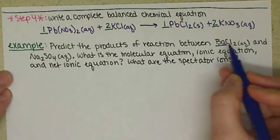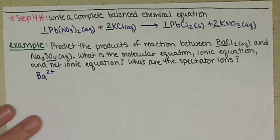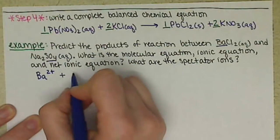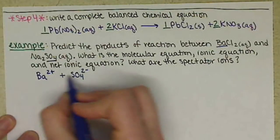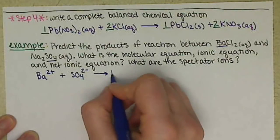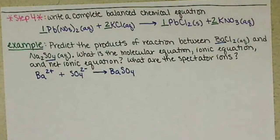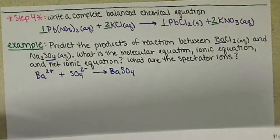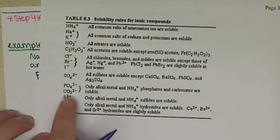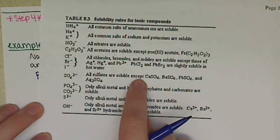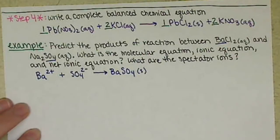So we have the barium ion combining with sulfate. Barium is in group 2A of the periodic table. Sulfate has a 2-negative charge, and barium has a plus-2 charge, so we need a 1-to-1 ratio, giving us BaSO₄. To determine the phase, we consult our solubility rules. Under the sulfate ion: all sulfates are soluble except barium sulfate, which is insoluble — so it forms a precipitate and has a solid phase.